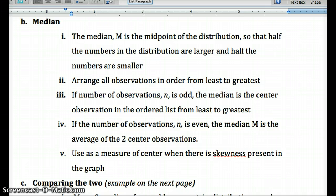So you order from least to greatest. If your number of observations is odd, then the median is the center observation. If it's even, then the median is the average of the two center observations. You're going to use this as a measure of center whenever there's any skewness present in the graph.